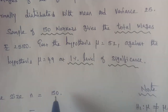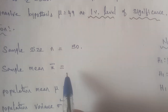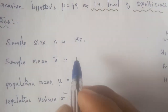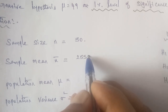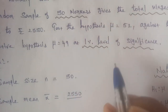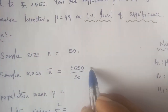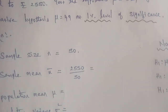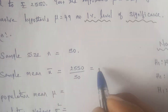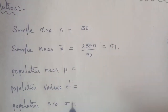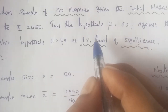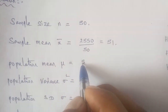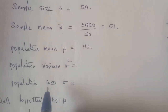X̄ = Σx / n. The summation x is total wages = 2550, divided by number of workers = 50, giving X̄ = 51. The population mean μ₀ = 52, as given in the hypothesis to test.